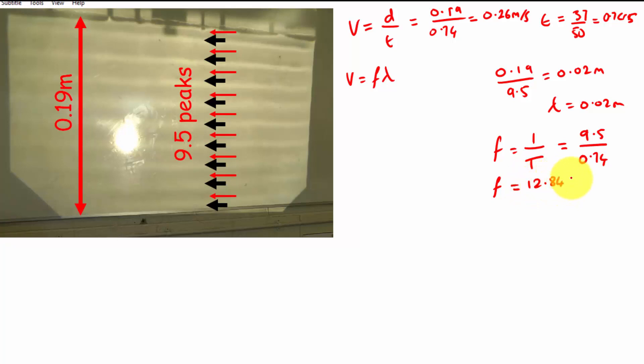And now I can just go ahead and substitute frequency and wavelength into this equation, so v equals 12.84 multiplied by the wavelength 0.02, which gets me again a number that I'm going to round to two decimal places, but basically 0.26 meters per second.